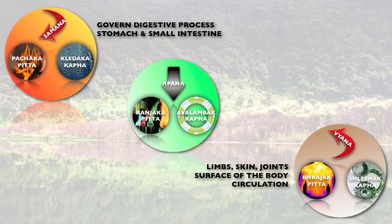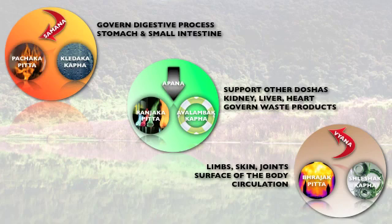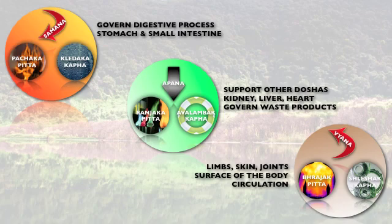Apanavayu, Ranjak Pitta, and Avulambak Kapha play a supportive role for the other doshas and are mainly related to the internal organs like kidney, liver, and heart. They govern the waste products of the doshas. Apanavayu governs intestinal excretion, Ranjak Pitta governs the excess of blood and bile, while Avulambak Kapha governs excess of mucus in the chest and lungs.